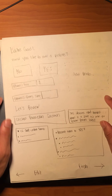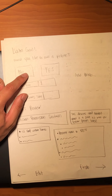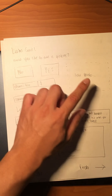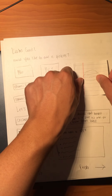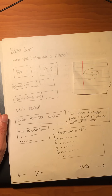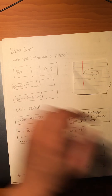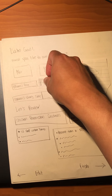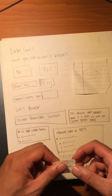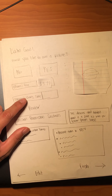Once everything is typed up, the user clicks continue to move to the next page, which asks if they'd like to add a picture. If they tap yes, a box appears where they can select a photo from their camera roll or take a picture and upload it. They can also add optional additional information, like the price per serving — for example, about $3.79 — and the cooking time, which is about 30 minutes.